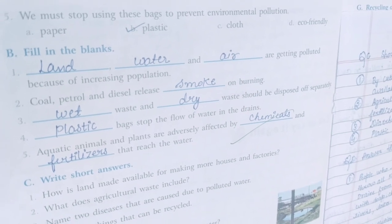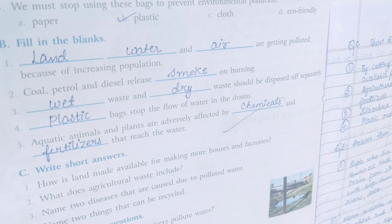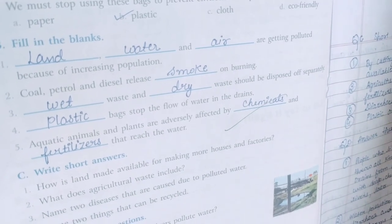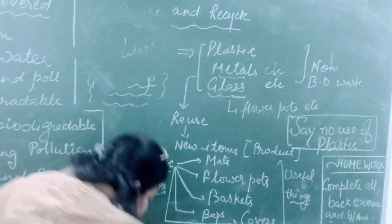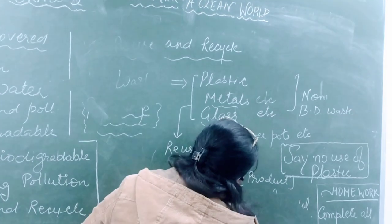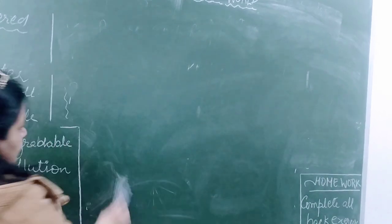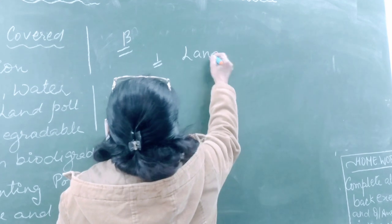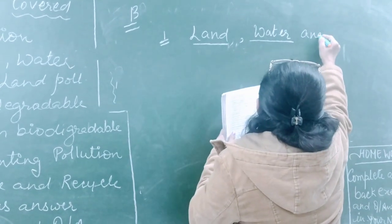Now come on to exercise B — fill in the blanks. First blank: dash, dash and dash are getting polluted because of increasing population. You have to write land, water and air. Second blank: coal, petrol and diesel release smoke.